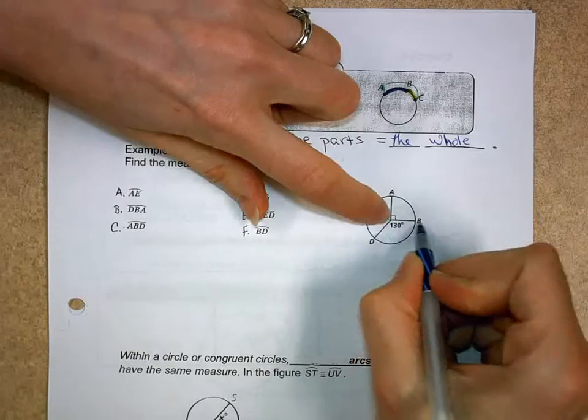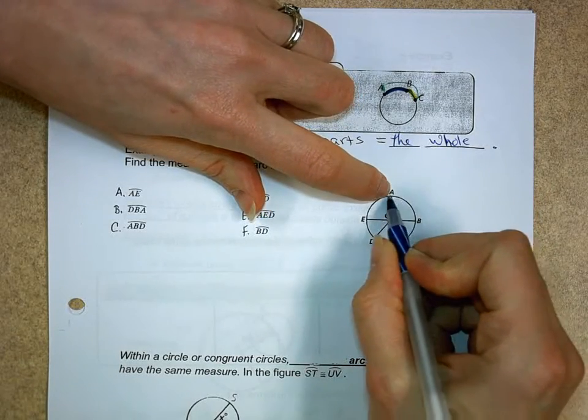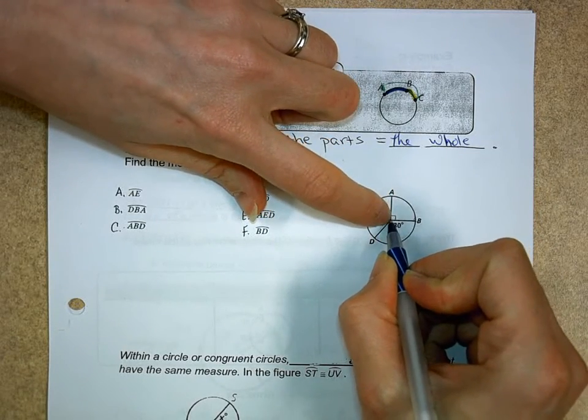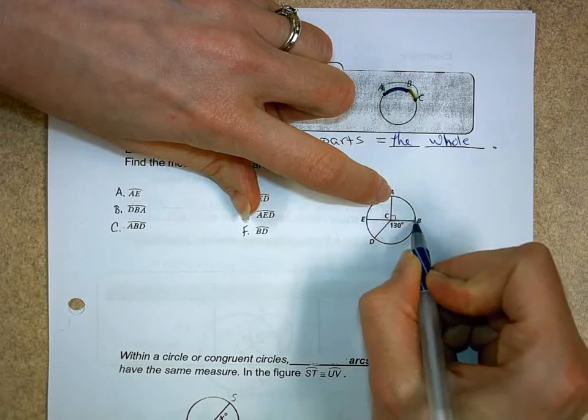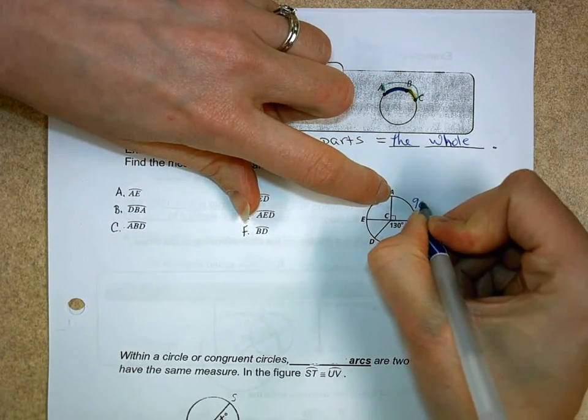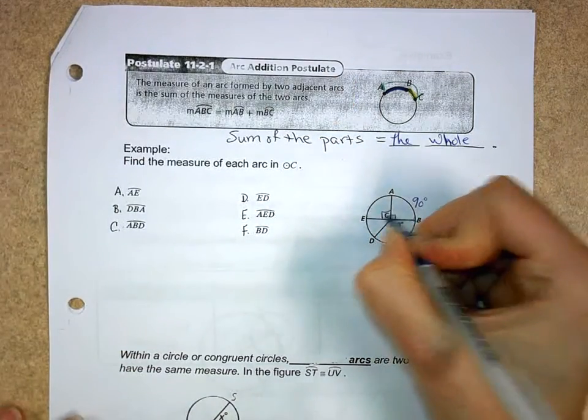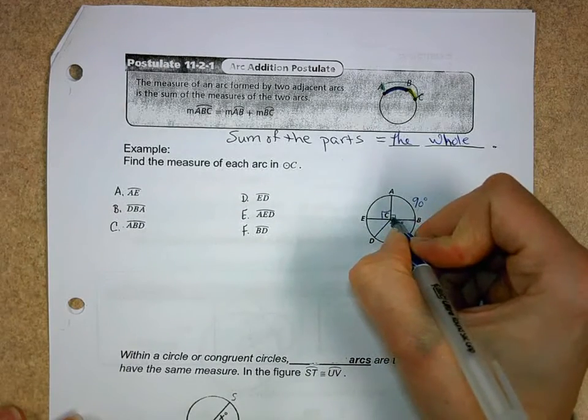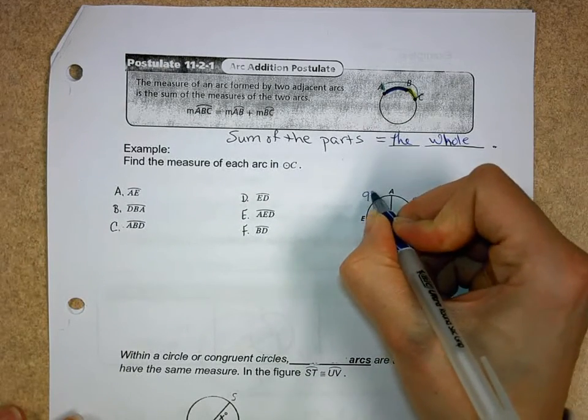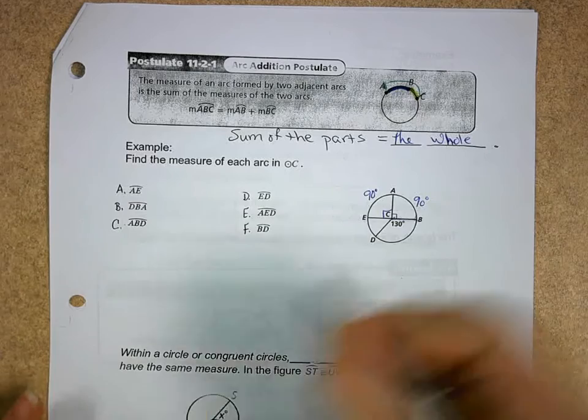So I'm going to look at angle ACB. That's my central angle. So that would be arc AB. If this one's 90 degrees, what's the measure of my minor arc? That's right, 90 degrees. Well, that means this one was 90 degrees because those are a linear pair. So arc AE is also 90 degrees.